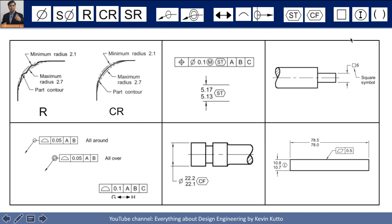Other symbols include the reference symbol, which is very easy to understand and has been in use for ages. The dimension origin symbol indicates where dimensions originate in the drawing. The arc length symbol, again very easy to understand, represents the length of an arc.